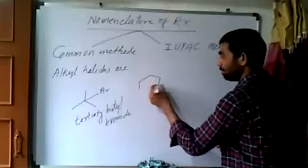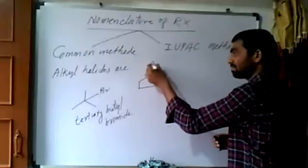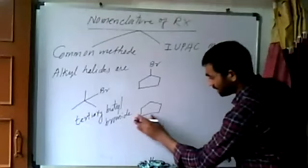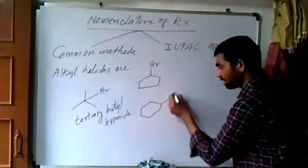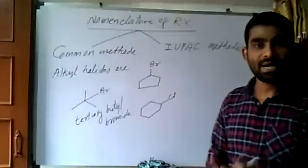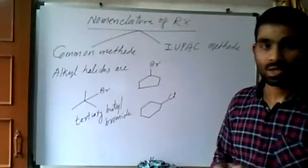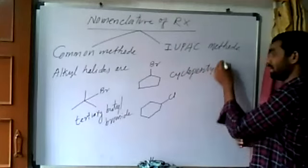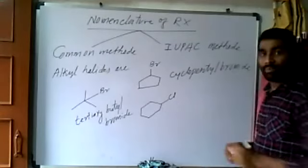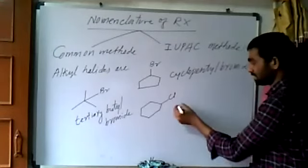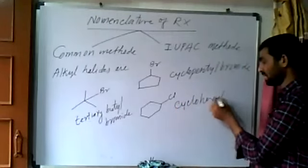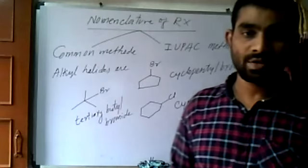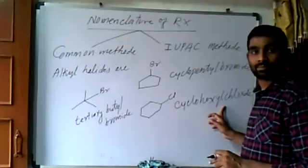If I write here cyclopentane ring, and here I am attaching bromine, what would be the name? If I am writing here cyclohexane and I am writing Cl, what would be the common name? Common name is cyclopentyl bromide. This is cyclopentyl bromide. What about this? This is cyclohexane chloride. Right?